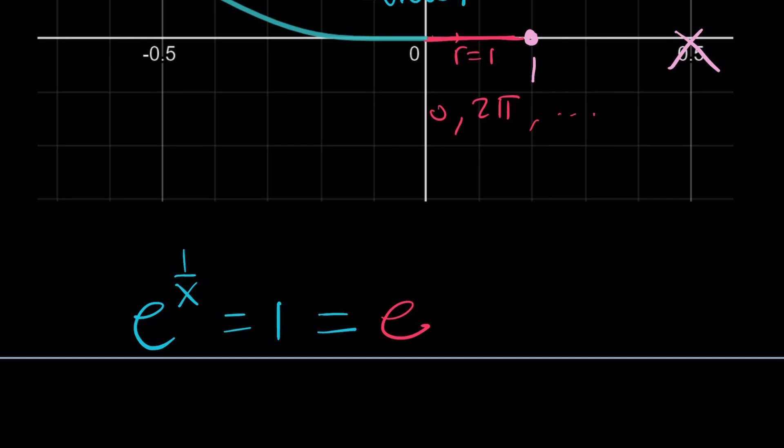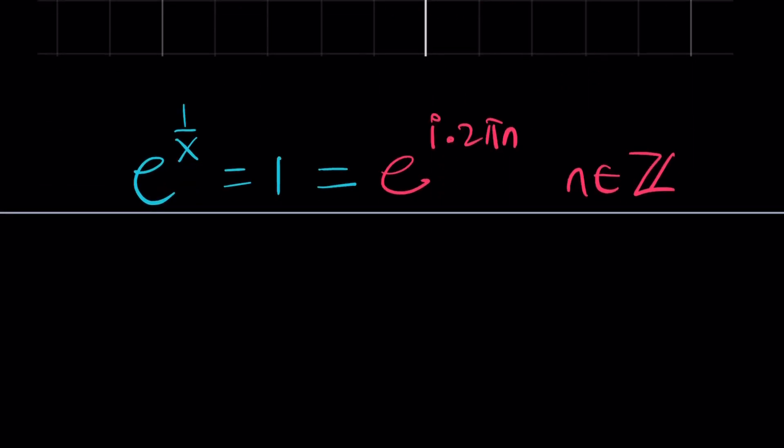So I can basically write this as e^(2πn multiplied by i). So let's go ahead and write it like this: i times 2πn. Here, n is an integer. So we're looking at multiples of 2π. And this is great, because this allows us to solve this problem, which wasn't solvable in the real world.